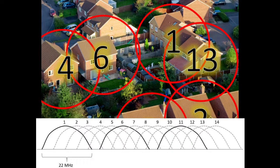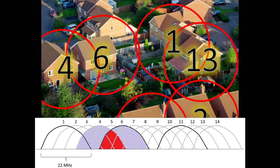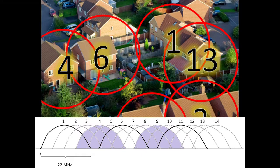So let's have a look at the first two houses. One of them is using channel 4 and one of them is using channel 6, which are very close to each other. If the house using channel 6 changed to using channel 9, then they'll no longer be overlapping and they'll both notice that their Wi-Fi network becomes a lot faster.